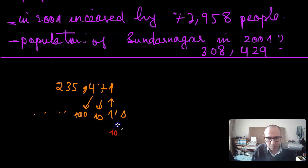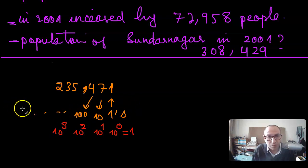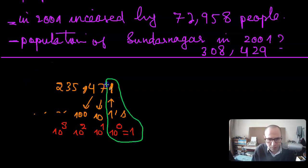These place values can be thought of as powers of 10: 10 raised to the power 0, which equals 1; 10 raised to the power 1, which is 10; 10 raised to the power 2, which is 100; 10 raised to the power 3, which is 1,000. So these are the place values — and this place value here is 10 raised to the power 0, which equals 1.